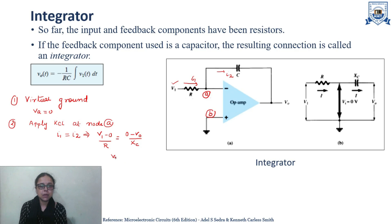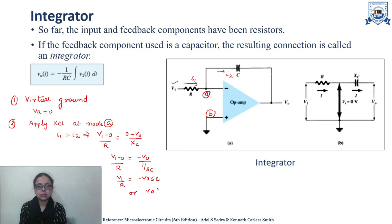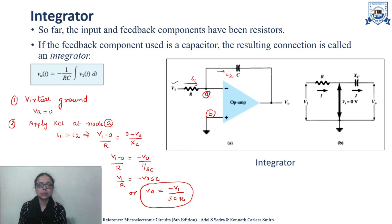V1 minus 0 divided by R equals minus V0, and Xc is the impedance of the capacitor, given by 1 upon SC. So V1 by R equals minus V0 times SC, which gives V0 equals minus V1 divided by (SCR). This is the expression for V0 in terms of V1, and this analysis is in the S domain.